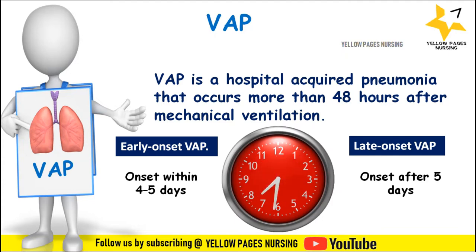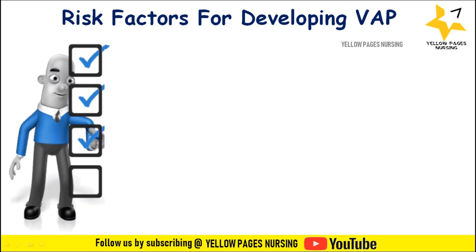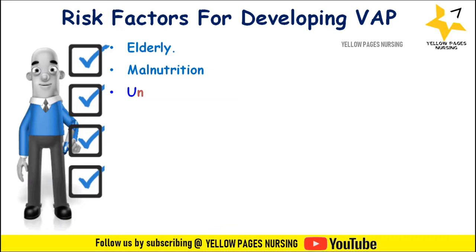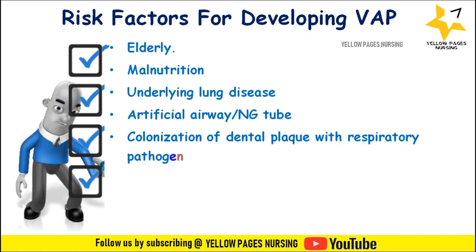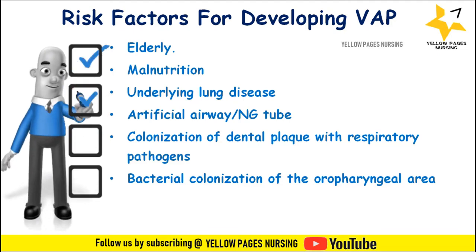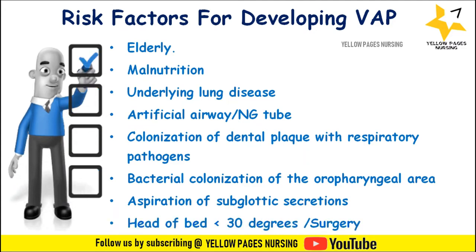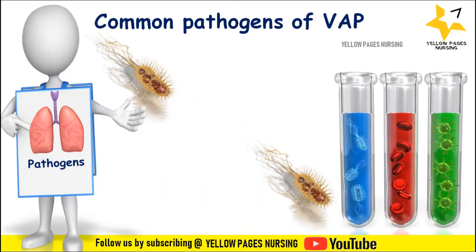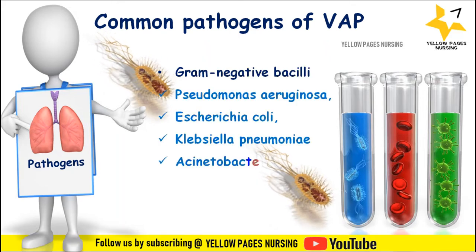The common risk factors for developing ventilator-associated pneumonia are: elderly people, malnutrition, underlying lung disease, artificial airway or nasogastric tube, colonization of dental plaque with respiratory pathogens, bacterial colonization of the oropharyngeal area, aspiration of subglottic secretions, and head of bed elevation less than 30 degrees or post-surgery. Common pathogens of VAP include gram-negative bacilli such as Pseudomonas aeruginosa, Escherichia coli, Klebsiella pneumoniae, and Acinetobacter, and gram-positive cocci including Staphylococcus aureus.